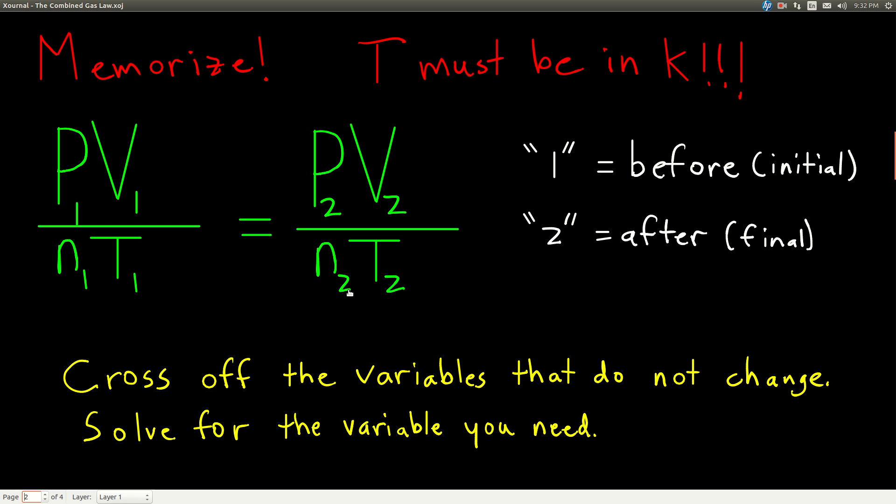And in the problem, you'll be told what's not changing or it's not mentioned, so it's not changing. Cross it off, and what you have is one of those laws. It's a simpler form of the combined gas law, and all you're going to do is once you've crossed off and erased basically everything that does not change, then you're going to figure out which of the variables you're trying to find. Rearrange, do a little bit of algebra, rearrange the equation, solve for the variable that you're trying to find, and then plug everything in and get your answer. Remember that you don't have to convert pressure to atmospheres or volume to liters as long as you have the same units on both sides, but T, temperature, has to be in Kelvin.